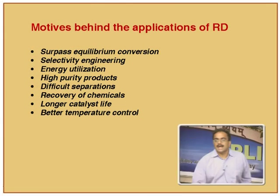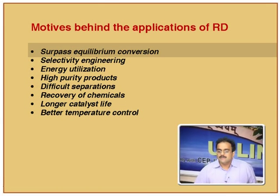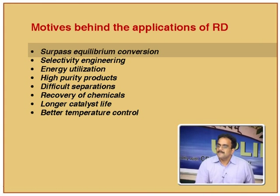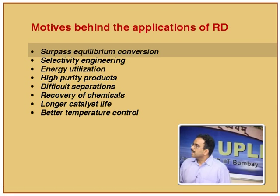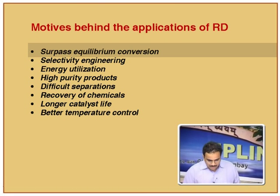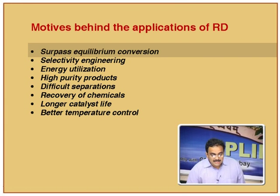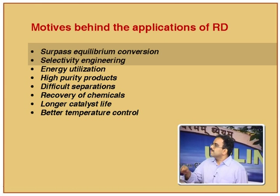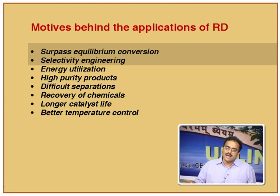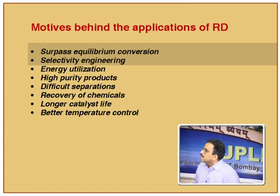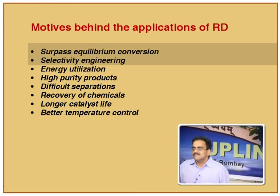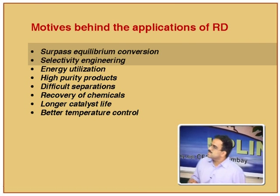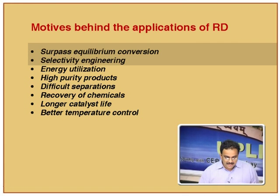What are the different motives behind application of reactive distillation? The first is to surpass equilibrium conversion — we have seen the A + B giving C + D case, where by Le Chatelier's principle, removing one product simultaneously shifts the reaction forward, reducing recycle cost. The methyl acetate example is the best example for this. The second objective is selectivity engineering: in series reactions A → B → C, if I can remove intermediate product B during the course of the reaction by distillation, I can suppress the side reaction B → C and enhance yield toward the intermediate product.